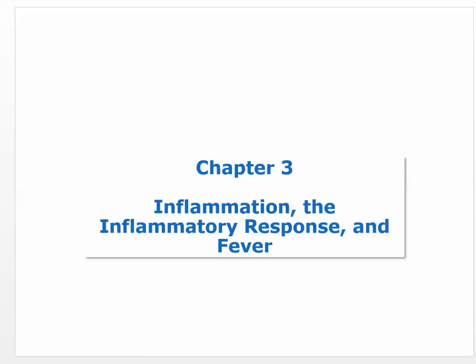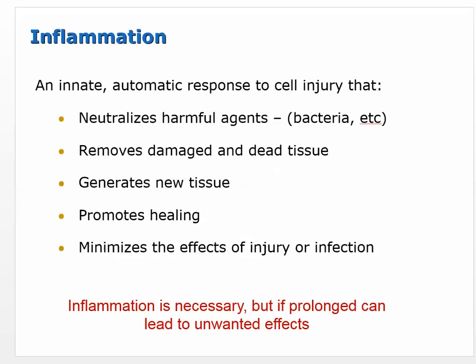This is chapter three, and we're going to be talking about inflammation and the inflammatory response, and we'll also talk a little bit about fever. When we talk about inflammation, it's an innate automatic response to cell injury. Cell injury could be just about anything — you could scratch your arm and trigger this inflammatory response, at least part of it. We're going to go through all the parts of inflammation in as much detail as we can.